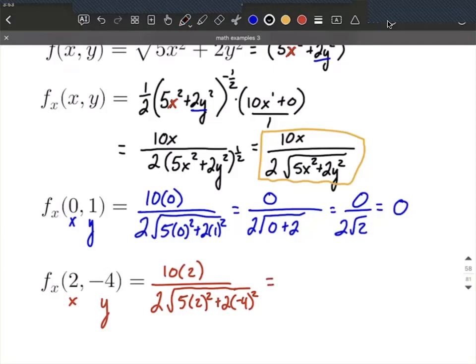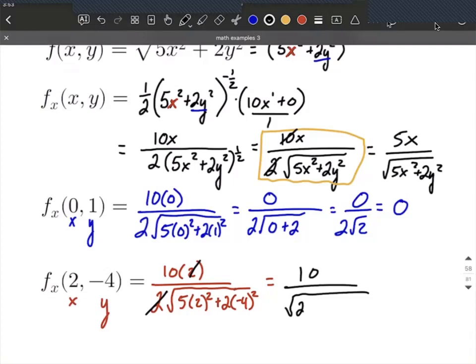The 2 multiplied by the numerator and denominator cancel out—we could have simplified earlier to get 5x over the square root. We end up with 10 in our numerator. Now let's simplify what's under the square root: 5 times 4 makes 20, plus when we square -4 first that's positive 16 times 2, making 32. Adding those together gives us 10 over √52.